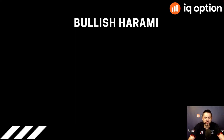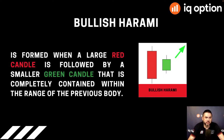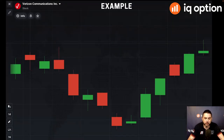Let's jump into the first one: the bullish harami. It is a bullish pattern consisting of a large red candle followed by a smaller green candle, the body of which is totally contained within the first candle. As you can see, a big red candle and then a smaller green candle whose body is inside of the first one — that big candle can basically eat the small one whole. Memorize it, remember it.